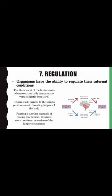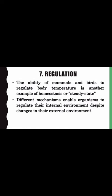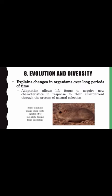Theme 7 — Regulation: organisms have the ability to regulate their internal conditions. The ability of mammals and birds to regulate body temperature is another example of homeostasis, or steady-state. Different mechanisms enable organisms to regulate their internal environment despite changes in their external environment.